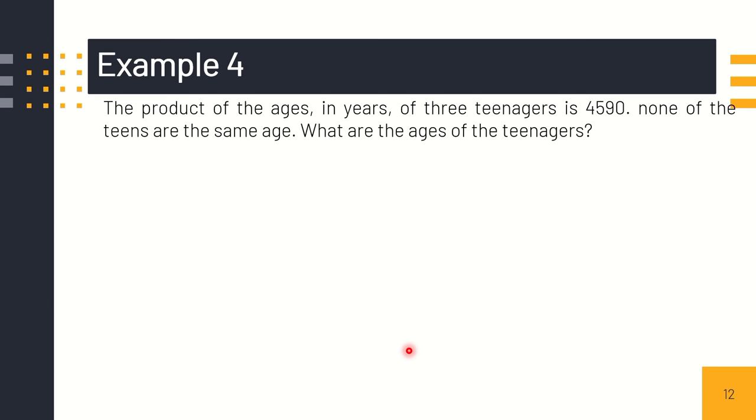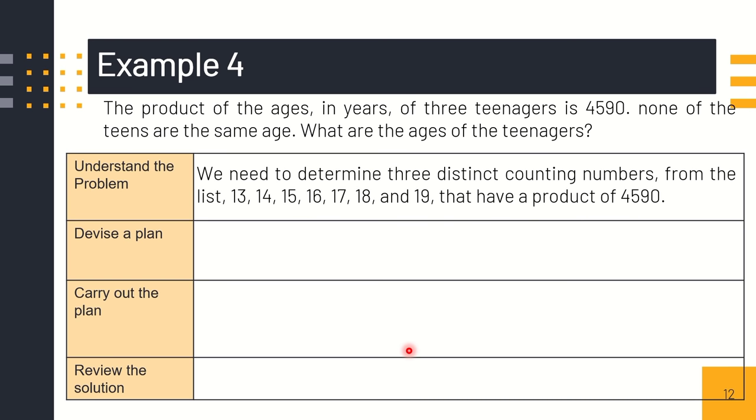Another example, the product of the ages in years of three teenagers is 4,590. None of the teens are the same age. What are the ages of the teenagers? First, we need to understand the problem. We need to determine three distinct counting numbers. When you say distinct, that will be from 13, 14, 15, 16, 17. That will be our given ages of the teenagers that produce a product of 4,590. What will we do first?